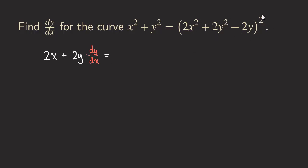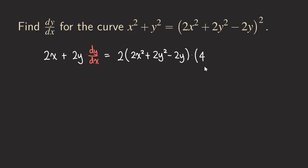Now equals — on the right side there is a 2 on the outside, so we use the power rule: bring the 2 to the front, getting 2 times the inner function unchanged, which is 2x² + 2y² − 2y, raised to the power 1. Then multiply by the derivative of the inside, so we get 4x (derivative of 2x²), plus 4y times dy/dx (derivative of 2y²).